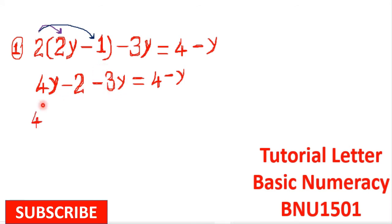In other words, I will rearrange and write 4y and -3y. From there, I will copy this -2 as it is, then equals to 4 - y.